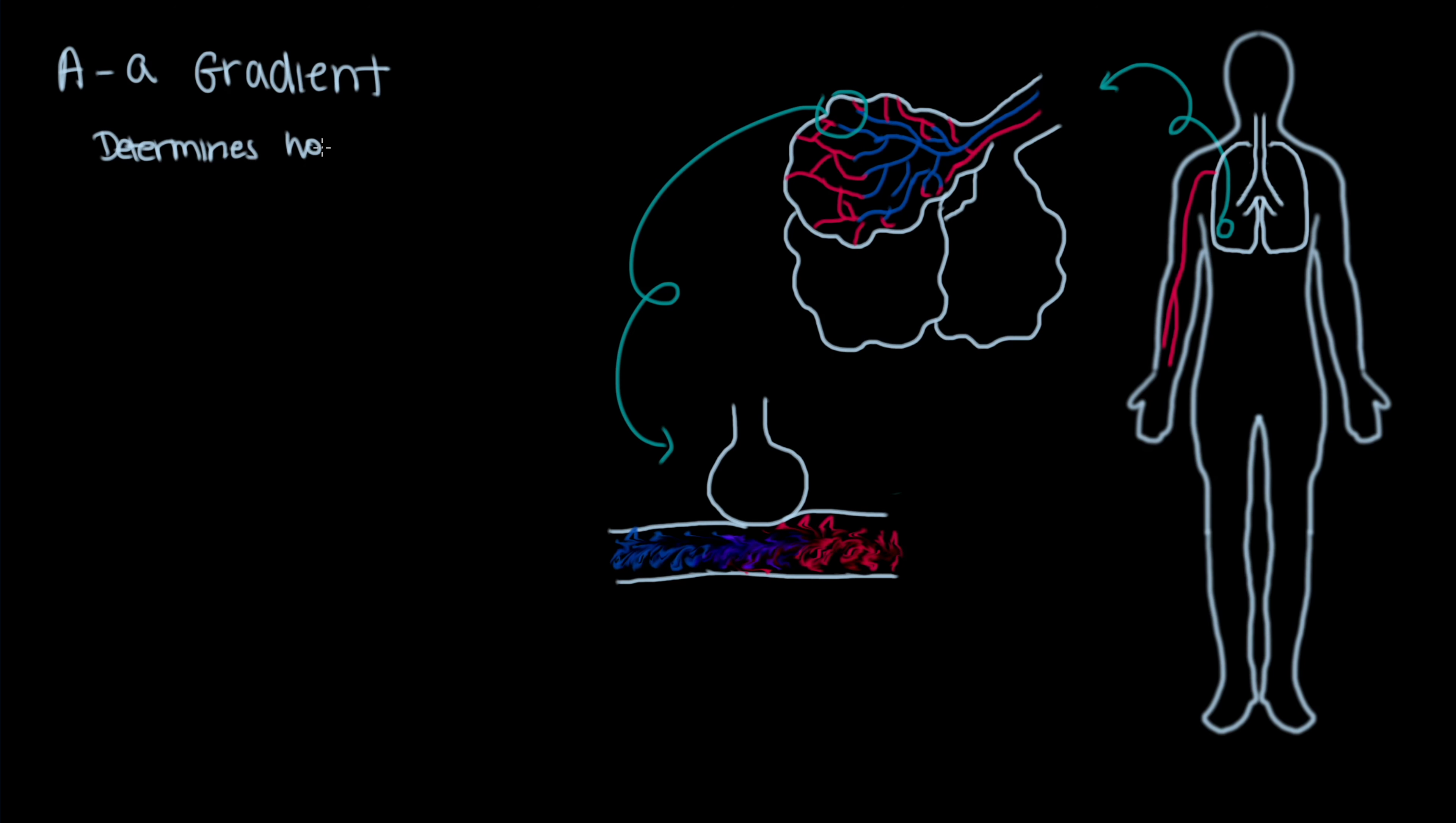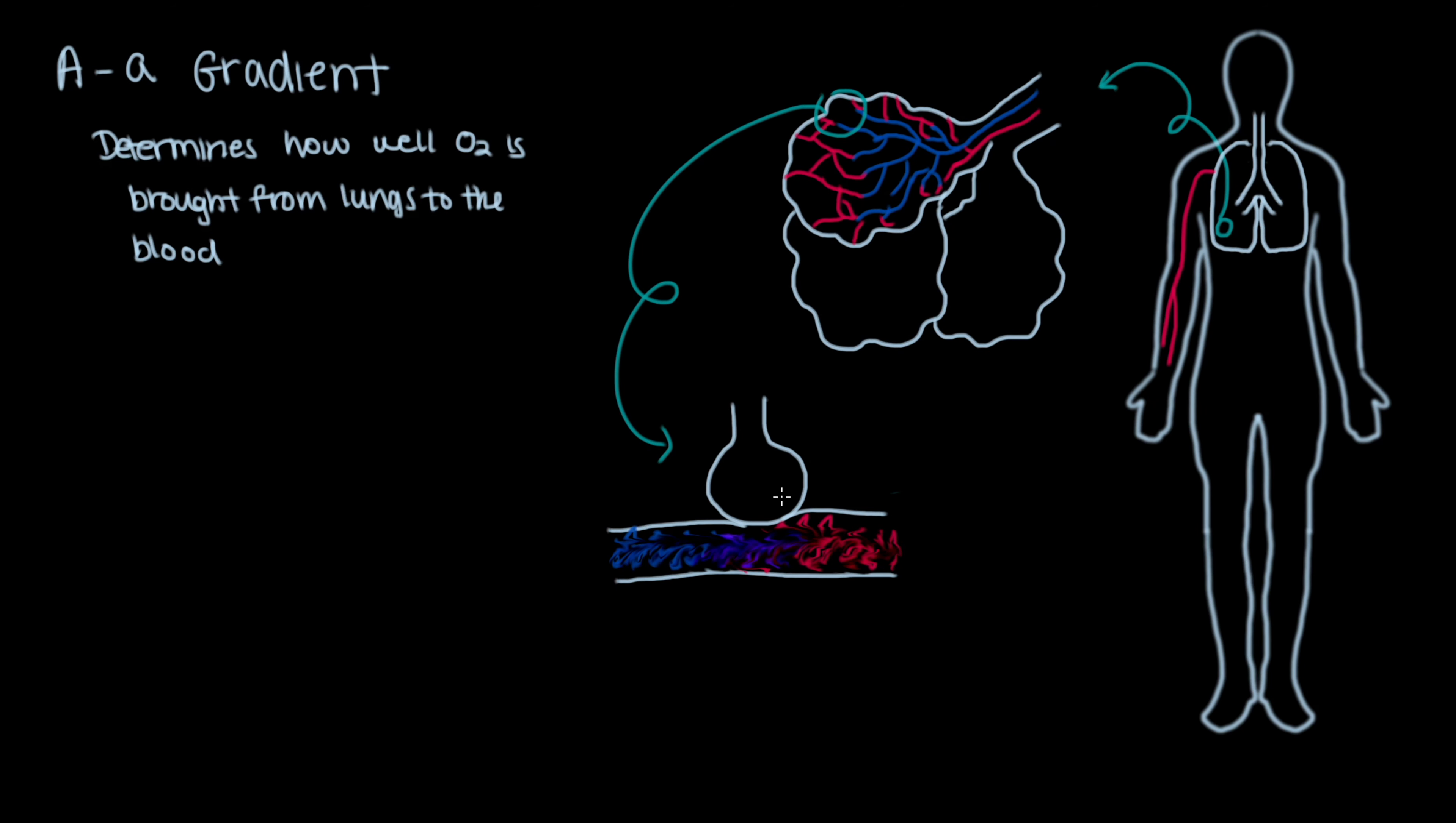The AA gradient is a very useful tool to determine how well the lungs are delivering oxygen to your blood. This video will go over an intuitive approach to understanding the formulas and calculations necessary to determine the AA gradient.